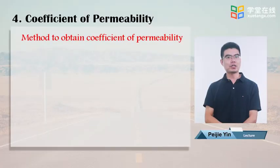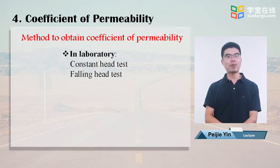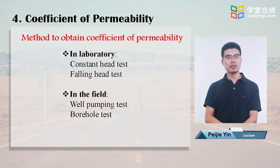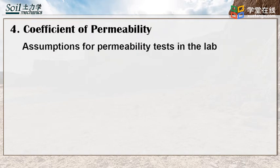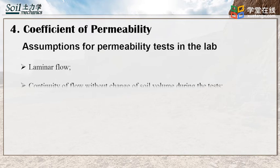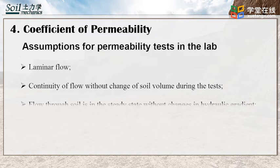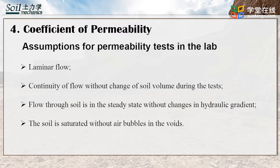There are three commonly used approaches to obtain the coefficient of permeability: the constant head test, the falling head test in the lab, and the well pumping test in the field. Alternatively, you can also estimate the coefficient of permeability from an empirical equation. When conducting permeability tests in the lab, there are several assumptions: laminar flow, continuity of flow without change of soil volume during the test, flow through soil is in a steady state without change in the hydraulic gradient, and the soil is fully saturated with no air bubbles in the voids.